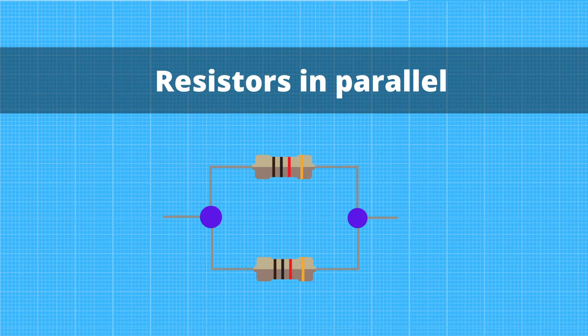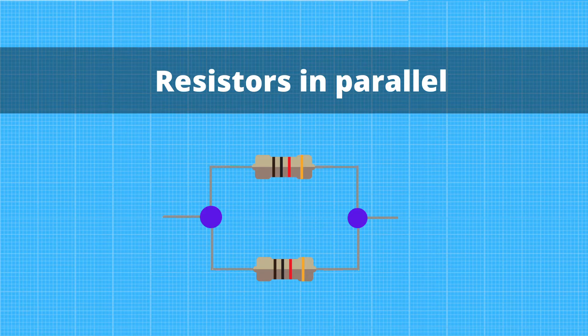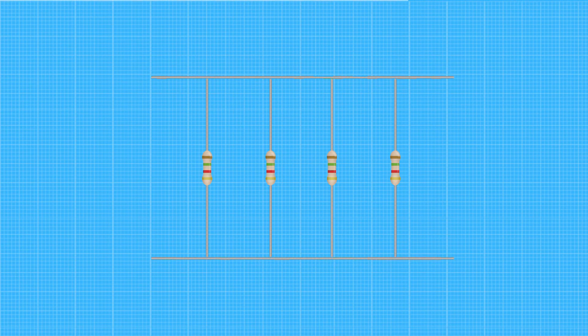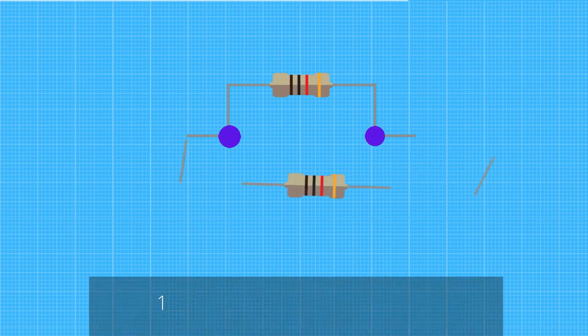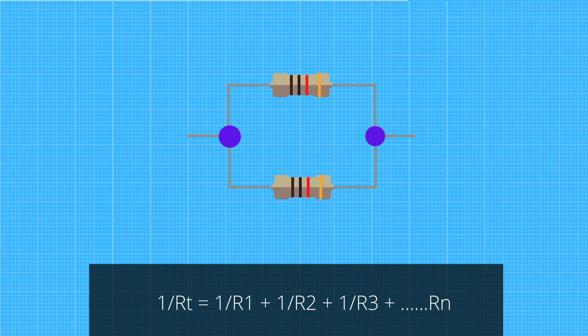Resistors in parallel are resistors that are connected across different branches of an electric circuit. They are also known as parallel connected resistors. When two or more resistors are connected in parallel, they divide the total current flowing through the circuit without changing its voltage. To find the equivalent resistance of resistors in parallel, use this formula: 1 over R total equals 1 over R1 plus 1 over R2 plus 1 over R3 plus, etc.